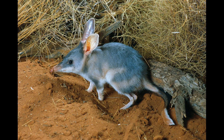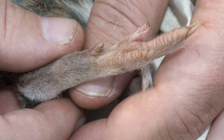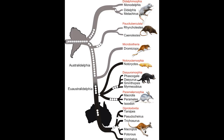Third, Peramelemorphia contains the bandicoots and bilbies, which can be found in Australia and New Guinea. These are mostly small omnivores who have long been the subject of taxonomic controversy. For one thing, their teeth are most similar to those of Dasyuromorphia, but they also possess second and third fused toes like Diprotodontia. It wasn't until genetic analyses came along that researchers were able to unite Dasyuromorphia with Peramelemorphia, showing that the toe configuration is an example of convergent evolution.